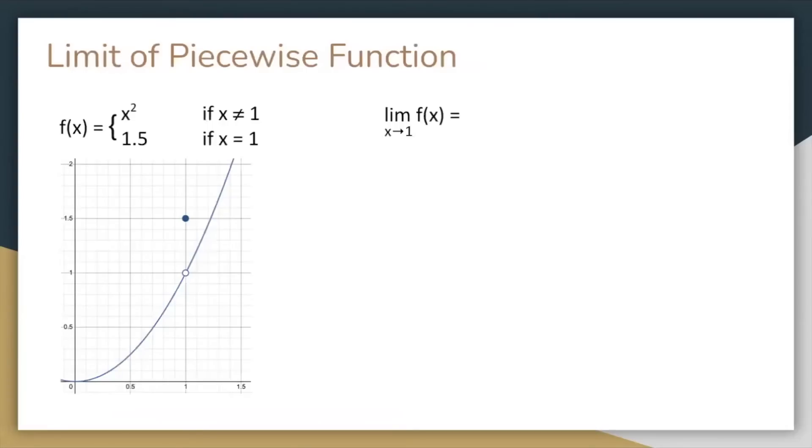But we can't always use direct substitution. Let's consider a piecewise function, f of x equals x squared if x is not equal to one, and 1.5 if x equals one. What is the limit of f of x as x approaches one? In this case, we can't use direct substitution because there is a jump at x equals one. The answer is one because as x approaches one, x squared approaches one. The limit doesn't care about what happens at x equals one.